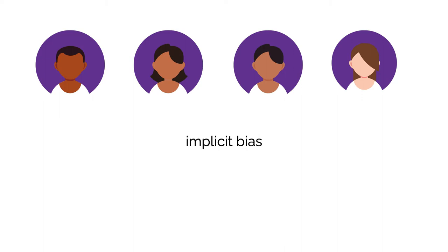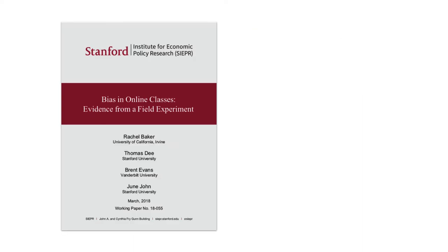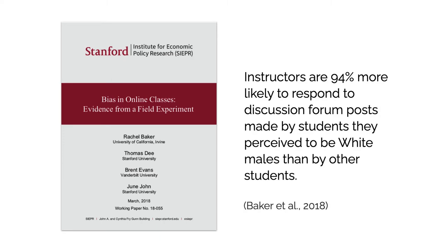Implicit biases do not go away in online environments. A 2018 study showed that implicit bias influences who college professors are more likely to interact with in online courses. The study found that instructors were 94% more likely to respond to discussion forum posts made by students they perceived to be white males than by other students.